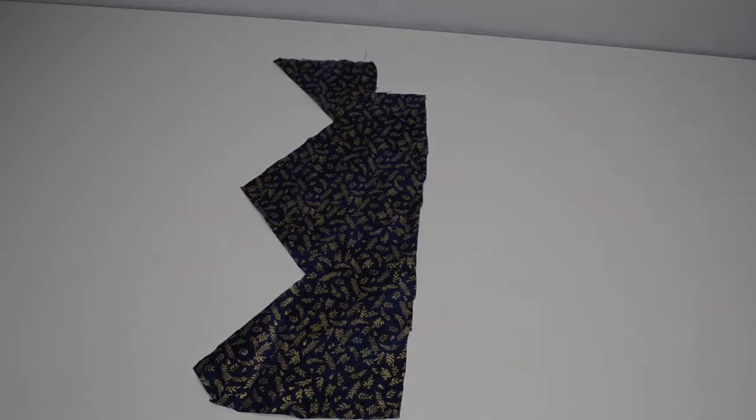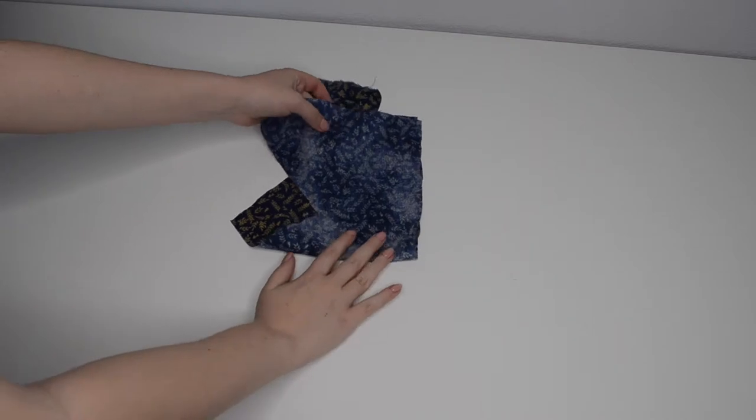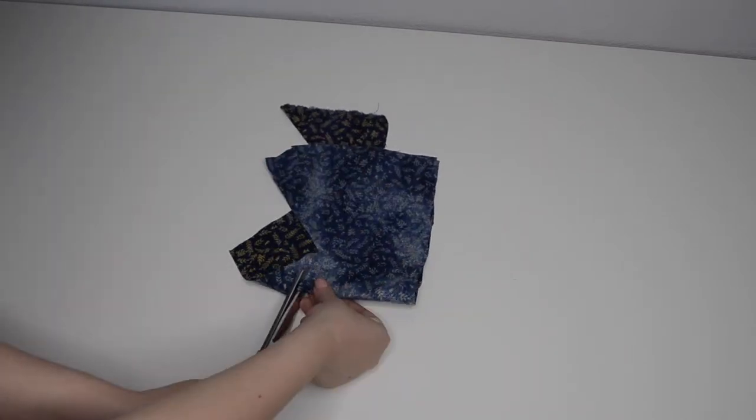For my next project I'm going to be making a catnip pillow. I folded the fabric right sides together and cut out a rectangular shape.